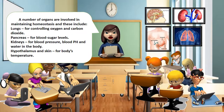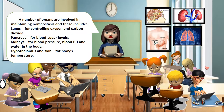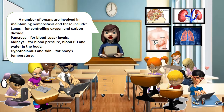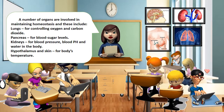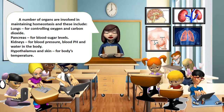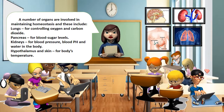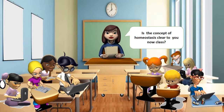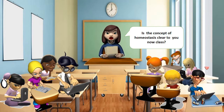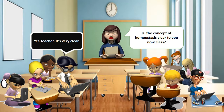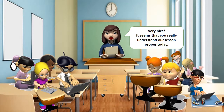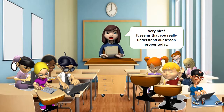Any deviation from homeostasis leads to disease or illness. A number of organs are involved in maintaining homeostasis, and these include: lungs for controlling oxygen and carbon dioxide, pancreas for blood sugar levels, kidneys for blood pressure, blood pH and water in the body, and the hypothalamus and skin for the body's temperature. Is the concept of homeostasis clear to you now, class? Yes, teacher. It's very clear. Very nice. It seems that you really understand our lesson proper today.